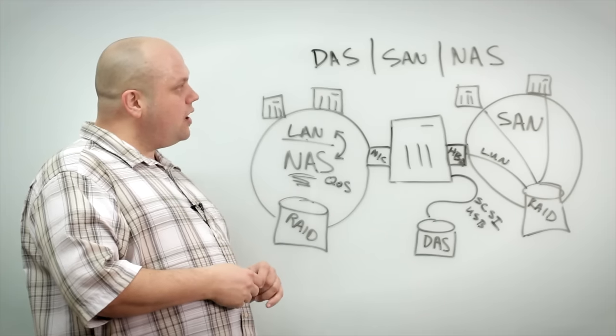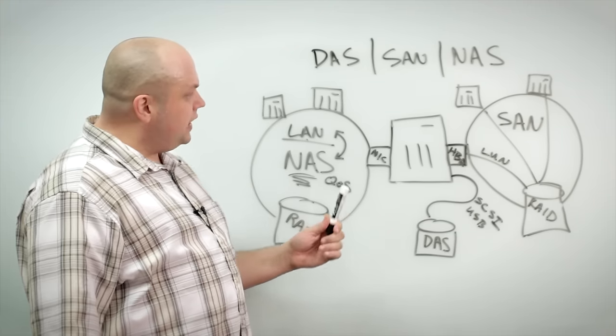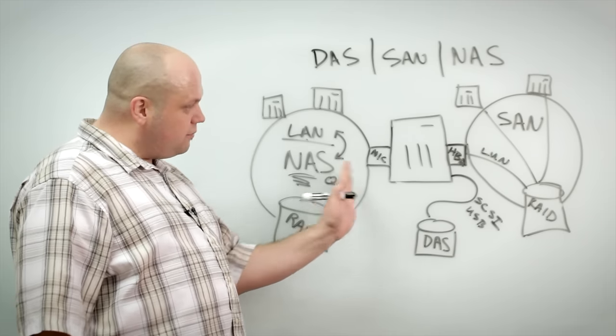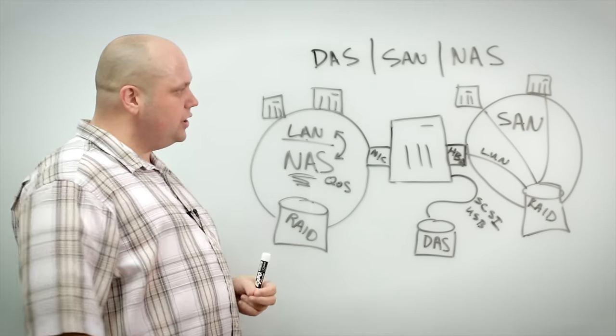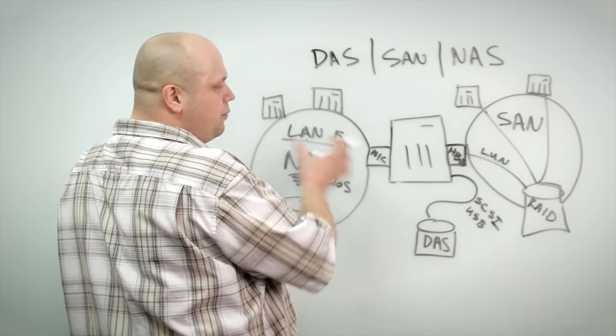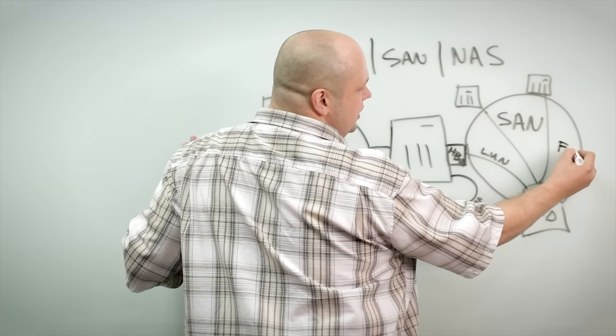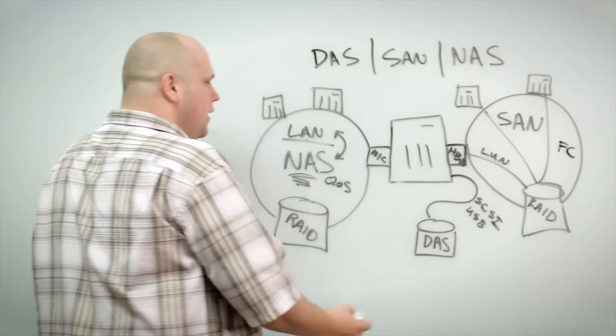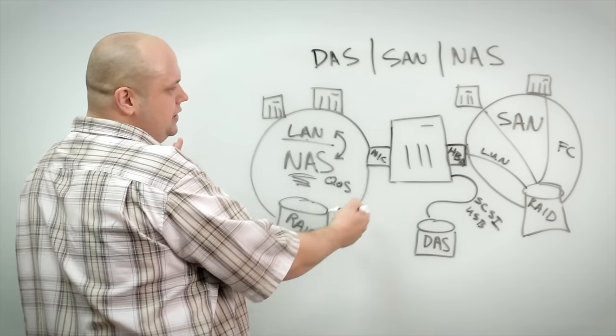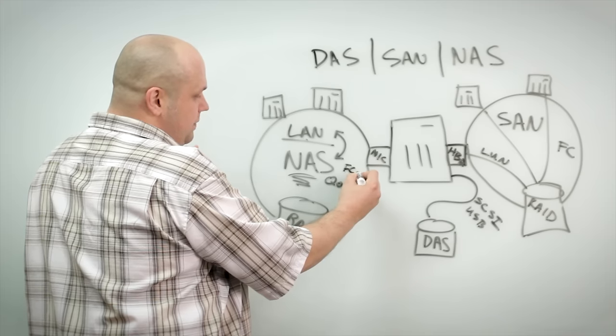So that describes the subtleties or at least some of the differences between DAS, SAN, and NAS. Another thing you might want to consider while you're looking at these solutions are the fact that you use slightly different protocols. Typically in a SAN, the best performance you're going to see is going to come from fiber channel. And when you come over to NAS, you're going to be crossing IP. So you have another protocol there. For example, fiber channel over IP.